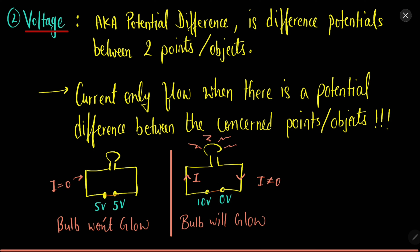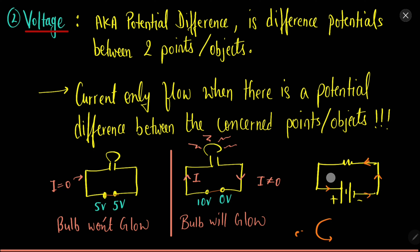One important thing to note: the electrons move toward the positive terminal, but the direction of conventional current is considered to be from the positive terminal to the negative terminal. So the direction of current and the direction of flow of electrons are opposite to each other. Remember this and keep it in mind.